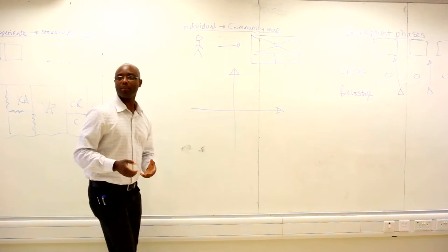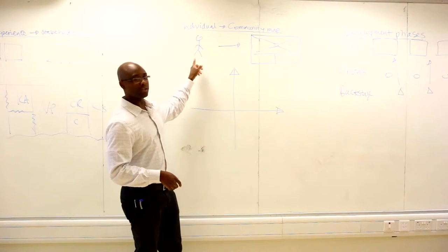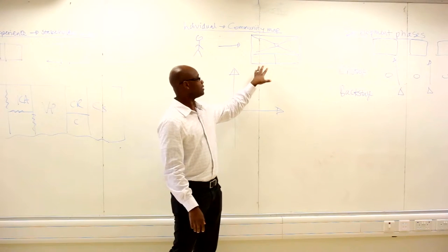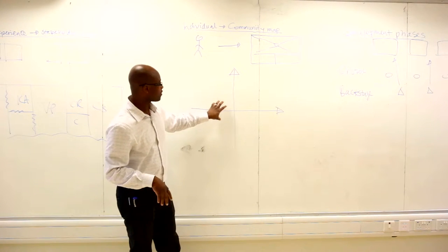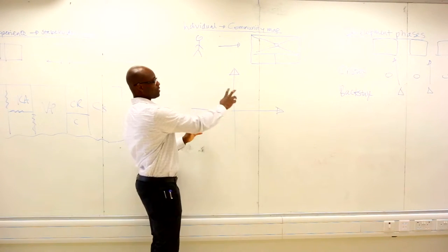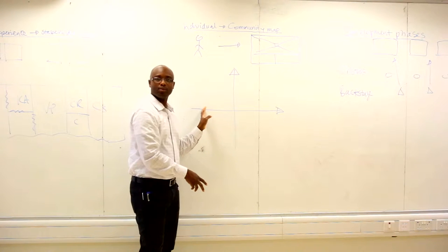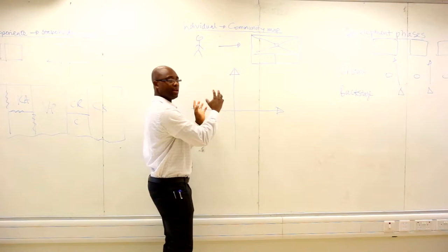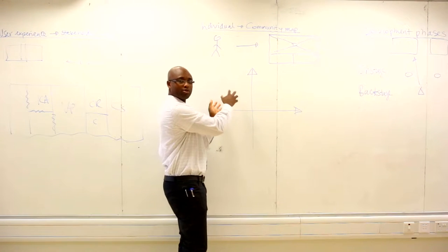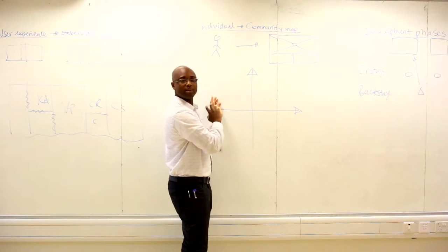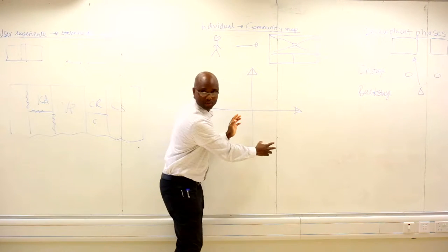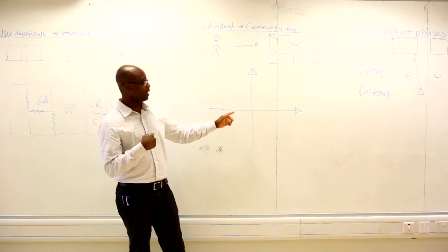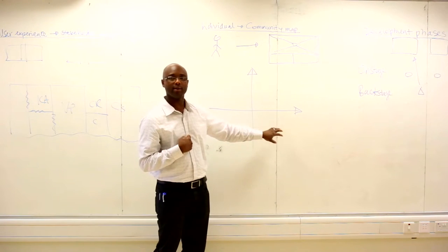A community is made up of individuals. If you get a good understanding of an individual and put them together into a community, you get a sense of where they cluster - and if they cluster in one quadrant, you know you need to move them to another. So you develop the tools and the engagement that will help you move them from one quadrant to the other.